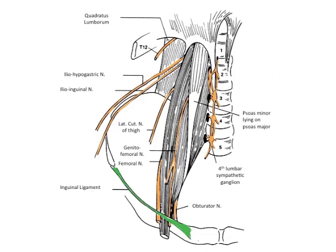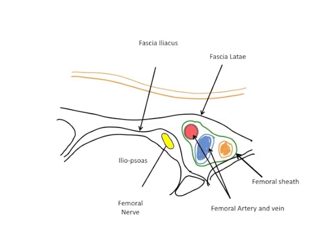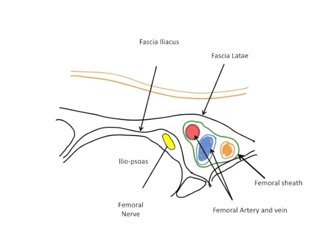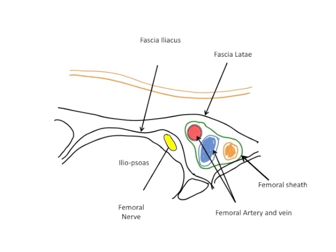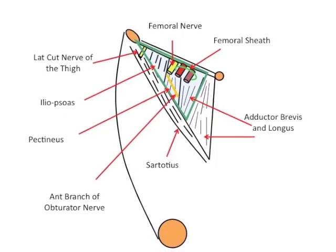It descends through the fibers of the psoas major muscle, emerging from the muscle at the lower part of its lateral border, and passes down between it and the iliacus muscle behind the fascia iliaca. It then runs beneath the inguinal ligament into the thigh and splits into anterior and posterior divisions.